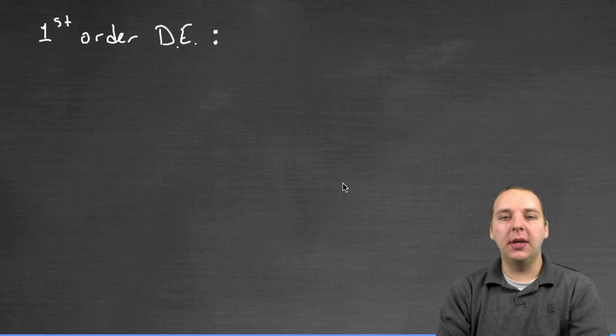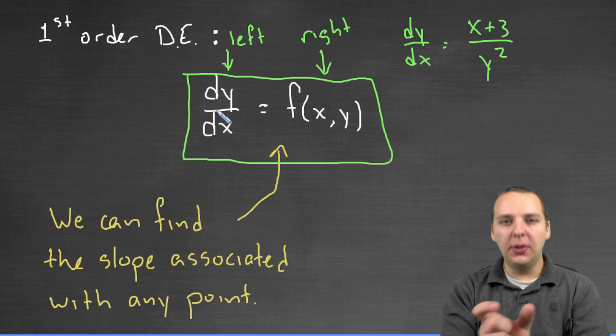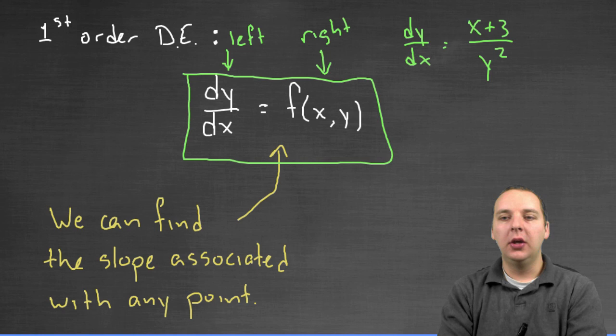Now how does that help us approximate the solution to the differential equation? We'll talk about that in a second, but let's at least understand that much right now. What we're talking about is that putting it in this form is the first thing we do, and that every point is associated with a slope.